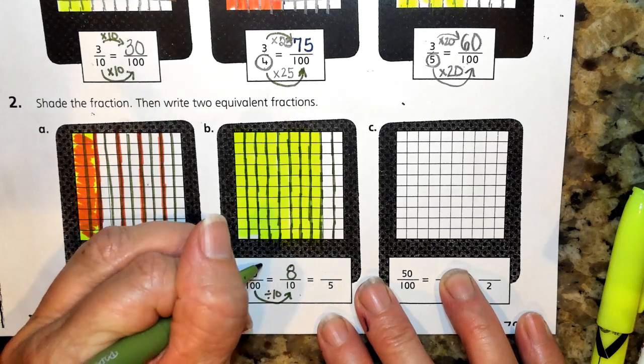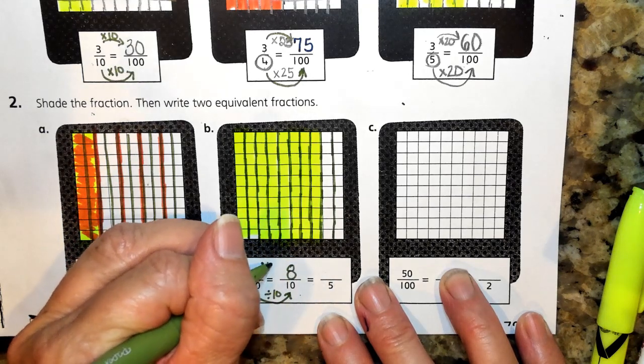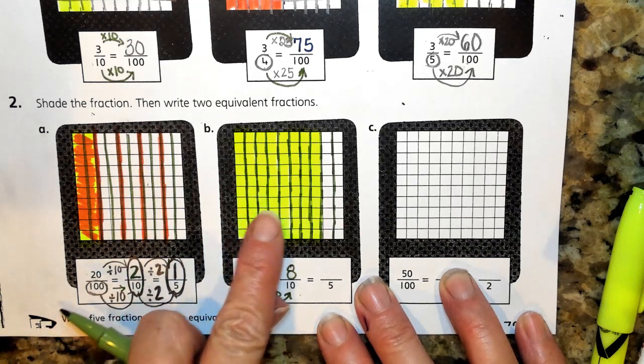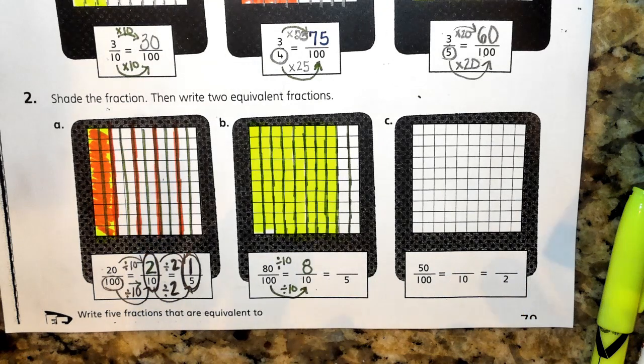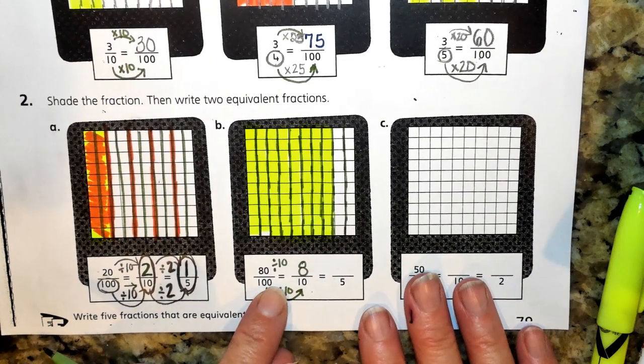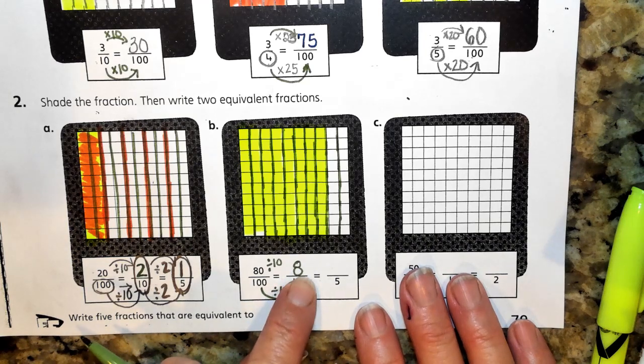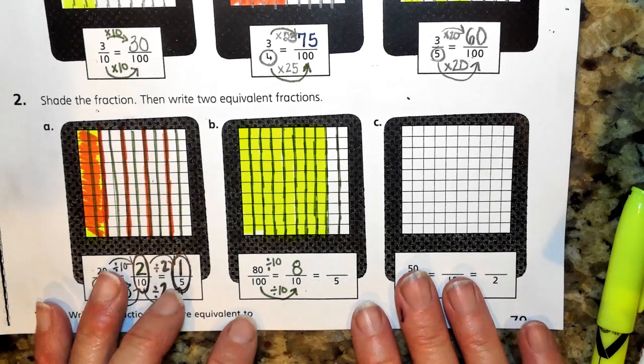Because 80 divided by the number 10 will give me 8 tenths. So remember, these are the same amounts shaded. No more, no less was shaded, but we renamed it using different numbers. Smaller numbers. Smaller numbers is a little more efficient to look at.